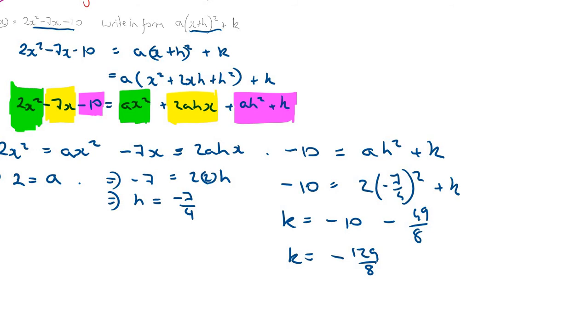a is 2, so 2x squared minus 7x minus 10 equals 2 outside of x plus h, which is minus 7 over 4, to be squared, plus k, which is minus 129 over 8. In other words, that's the completed square form of this equation.